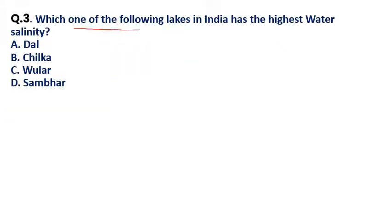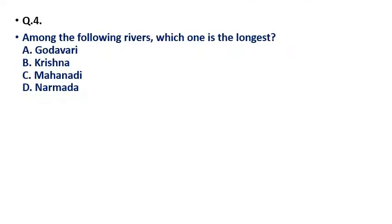Question 3: Which of the following lakes in India has the highest water salinity? Options: (a) Dal Lake, (b) Chilika Lake, (c) Wular Lake, (d) Sambhar Lake. The correct answer is option D — Sambhar Lake, which is located in Rajasthan. Most of the salt used in Rajasthan is taken from this lake.